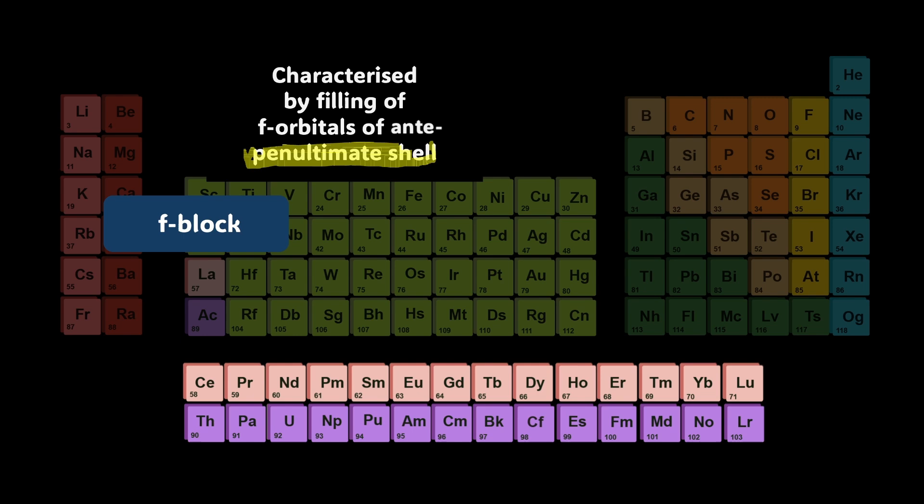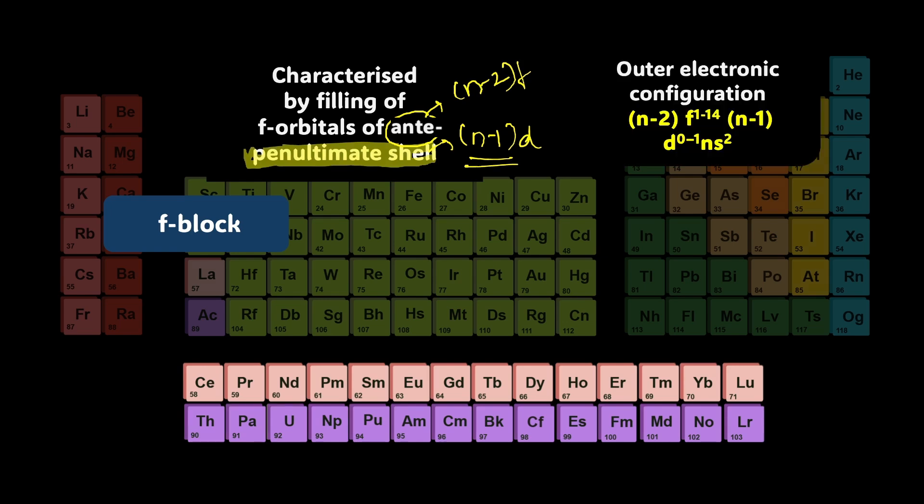Let's understand what is penultimate shell first. Penultimate shell is (n-1) d subshell. Because this is not the outermost shell, n will be the highest shell number. This is n minus 1, the penultimate shell. Anti-penultimate means (n-2) and (n-2) f subshell because we are talking about f block. F orbital of anti-penultimate shell means (n-2)f. So outer electronic configuration would look like (n-2)f¹⁻¹⁴, then (n-1)d⁰⁻¹ ns². This is the general electronic configuration for f block.